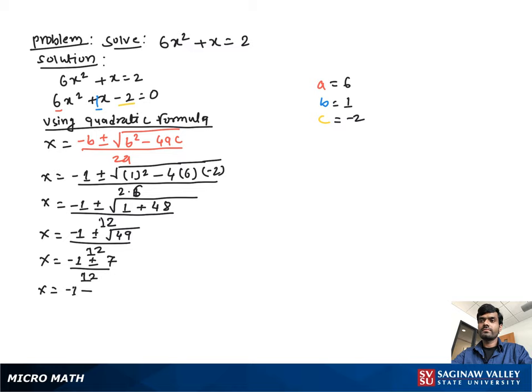Then solving each part, we get the x value. x = (-1 + 7) / 12 = 6/12 = 1/2. And -1 - 7 will be -8 over 12, which equals -2/3.